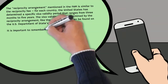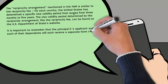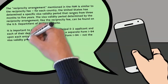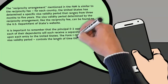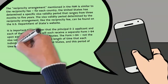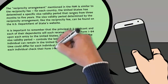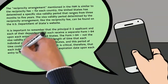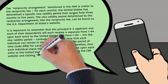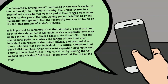It is important to remember that the principal E2 applicant and each of their dependents will each receive a separate Form I-94 upon each entry to the United States. The Form I-94, not the visa validity period, controls the length of time that each individual can remain in the United States, and this period of time could differ for each individual. It is critical, therefore, that each individual check their Form I-94 expiration date upon each entry to the United States. They can do so by visiting the CBP website and clicking 'Get Most Recent I-94' at the top of the page.